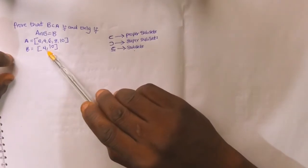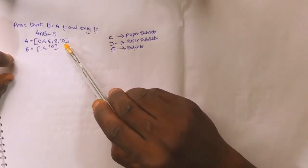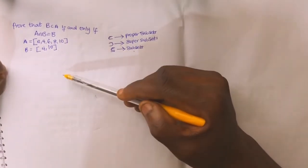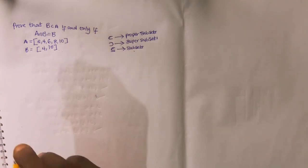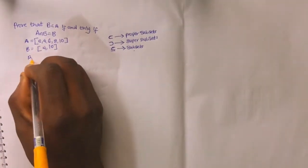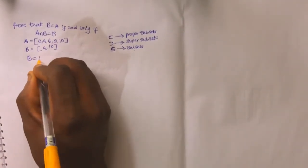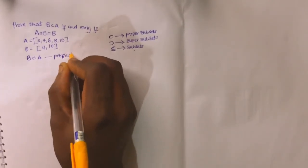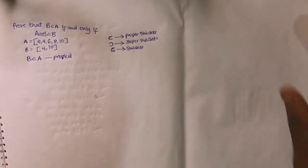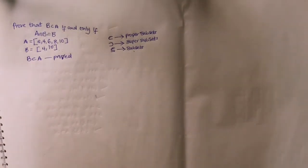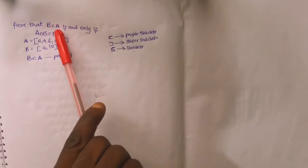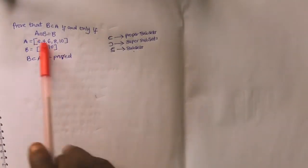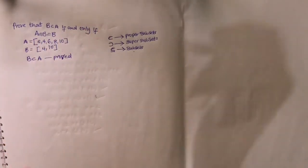Because 4 is in A and 10 is in A, and 4 and 10 are the elements of B, that means B is a proper subset of A — proved. But we are not stopping there, because that is not all we are asked to do. We also need to show that this holds if and only if A intersection B equals B.